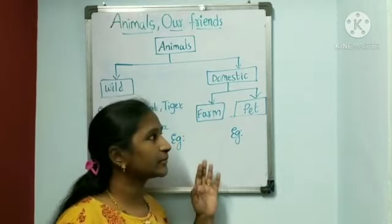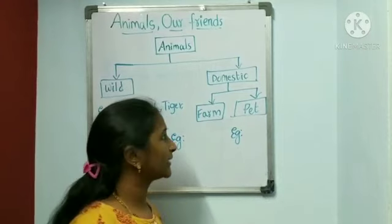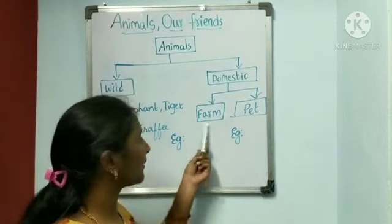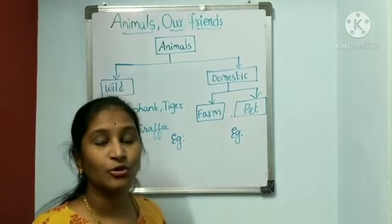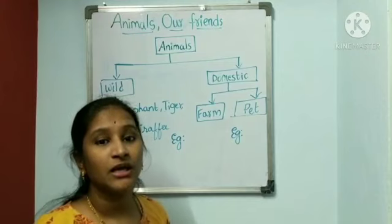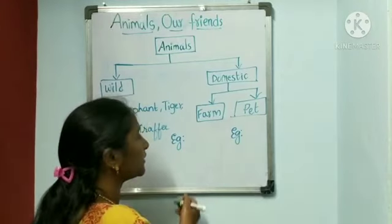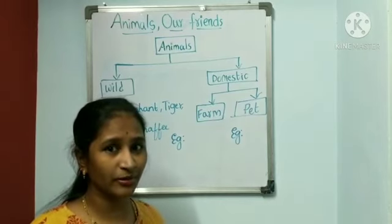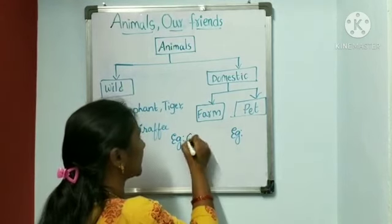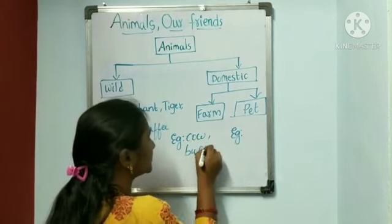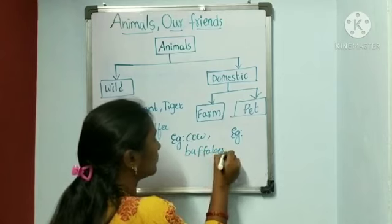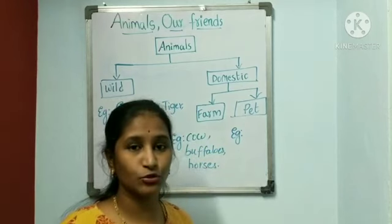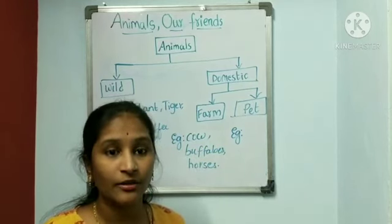Domestic animals are divided into two types: one is farm animals and the other one is pet animals. The animals which we keep at the farm are called farm animals. Do you know farm animals? Farm animals are cow, buffaloes, horses. So those animals are called farm animals.